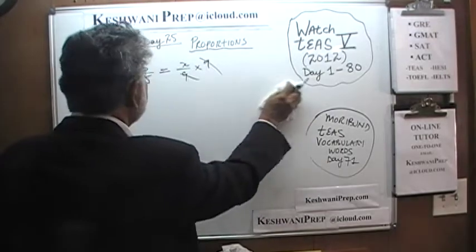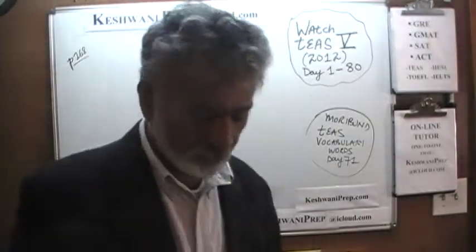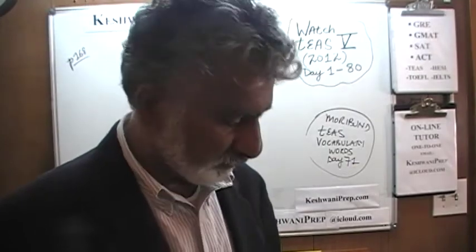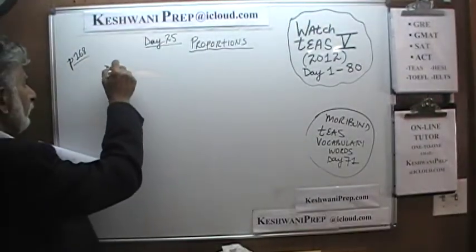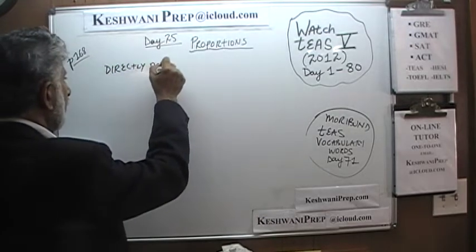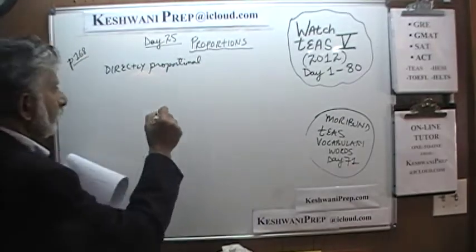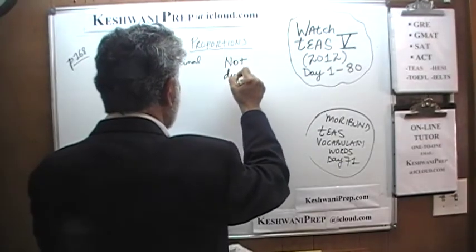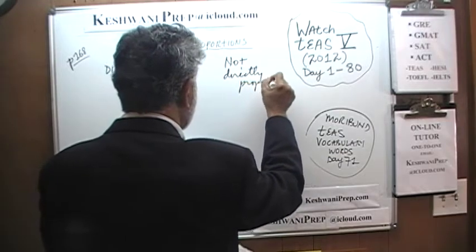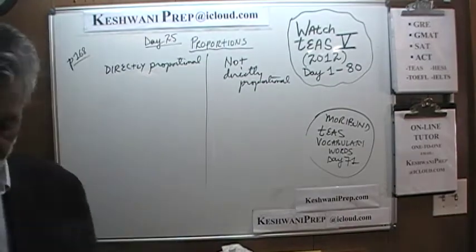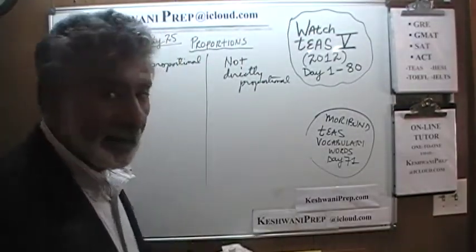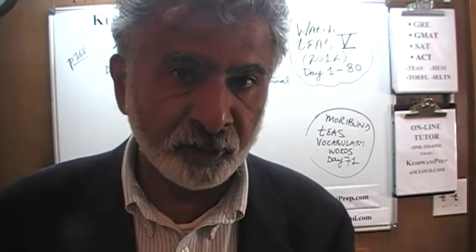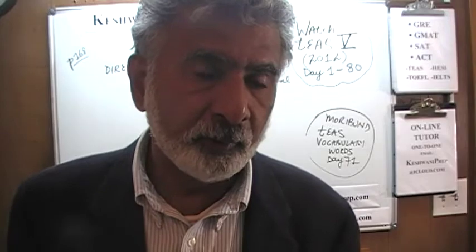Let's keep moving. At the bottom of the page they talk about one very important topic. Even though you will not see too many problems on this concept on the exam — maybe one or two — it is still important. The topic is: what does it mean for two variables to be directly proportional, and how does direct or non-direct proportionality manifest itself in the form of an equation?